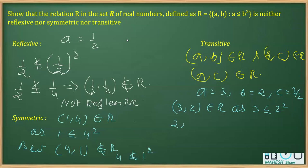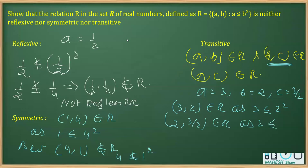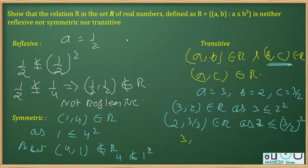Next, we show that (b, c) = (2, 3/2) belongs to R. We note that 2 ≤ (3/2)² = 9/4, which is approximately 2.25 — wait, actually 9/4 = 2.25 which is greater than 2, so yes, (2, 3/2) belongs to R. But then we show that (a, c) = (3, 3/2) does not belong to R, since 3 is not less than or equal to (3/2)² = 9/4 ≈ 2.25. Three is not less than 9/4, so (3, 3/2) does not belong to R.